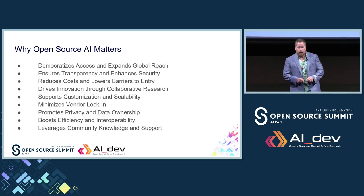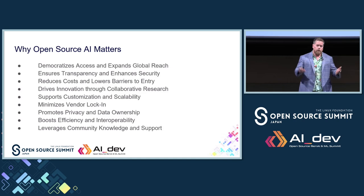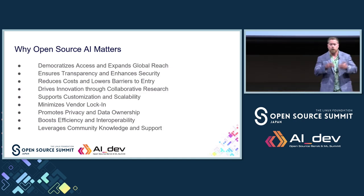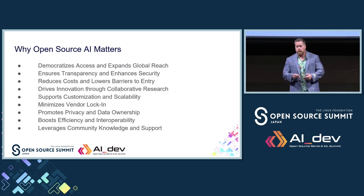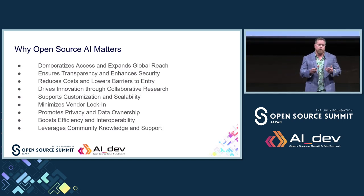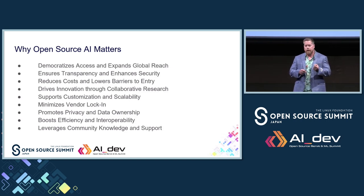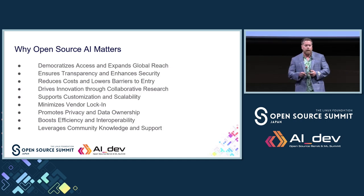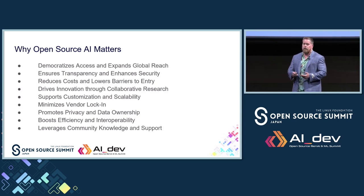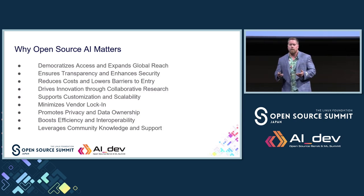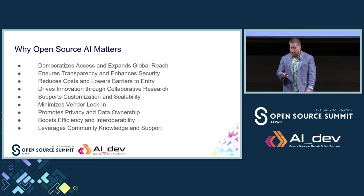I'd like to take the definition a little wider and talk about open source AI as a larger movement. Open source AI goes back over a decade and includes a really broad ecosystem of other projects oriented towards frameworks like PyTorch and TensorFlow, and inference engines like VLLM and DeepSpeed — projects that have helped advance open source AI and get us to the point where we are today, with both proprietary models and open models.